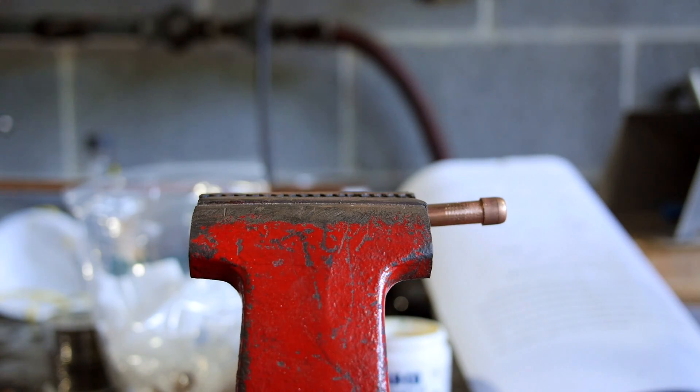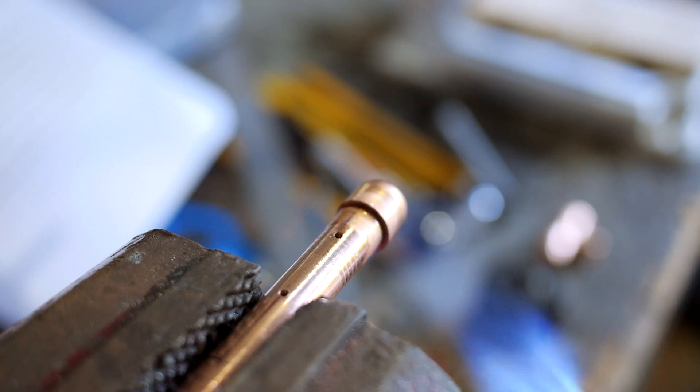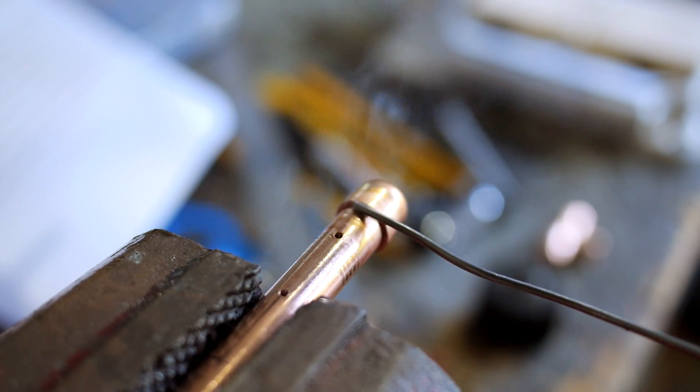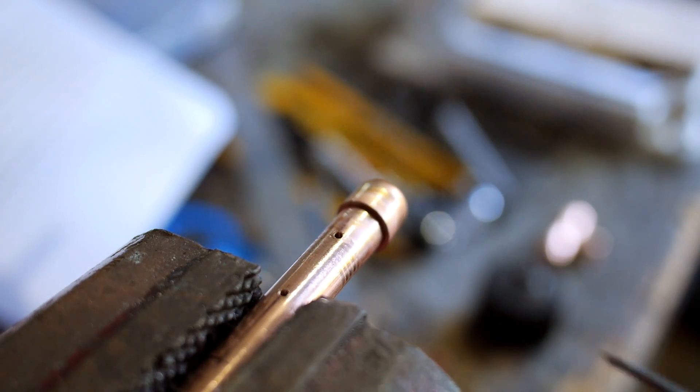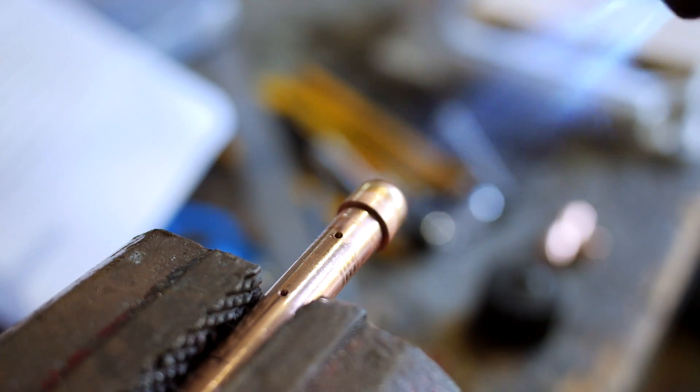Once the flux is applied, you can assemble the two parts and then begin to heat it with a torch. You want to heat the fitting, not the pipe, and you want to heat from all sides. As you heat, I tend to test it every now and then to see if the solder will flow into the joint.